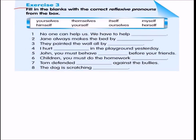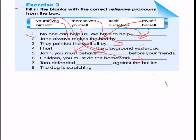Exercise 3: Fill in the blanks with the correct reflexive pronouns. 'No one can help us — we have to help ourselves.' 'Jane always makes the bed by herself.' 'They painted the wall all by themselves.' 'I heard myself in the playground yesterday.' 'John, you must behave yourself before your friends.' 'Children, you must do the homework yourselves.' 'Tom defended himself against the bullies.' 'The dog is scratching itself' — because it is an animal, we use 'itself.'